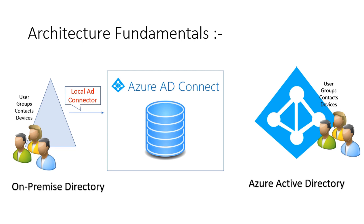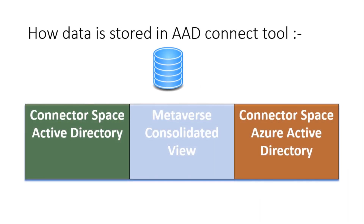With the help of the local AD connector, Azure AD Connect pulls information from your on-prem Active Directory, and with the help of the Azure AD connector, that same information is exported to Azure AD. So a connector is basically a medium through which Azure AD Connect as a tool communicates with the connected data sources. The database of Azure AD Connect has three logical subdivisions: the connector space of your Active Directory, the connector space of your Azure Active Directory, and the metaverse, where you see a consolidated view of an object that has to be sent to the cloud.